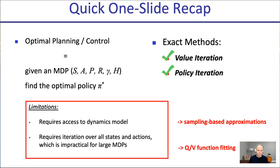In some sense you could think we're done, but we're not, because these methods have some limitations. First, they require access to the dynamics model or transition model — the probability of next state given current state and action. That's not often available when an agent has to learn in a new environment. So we'll look at sampling-based approximations where the agent collects their own experience and is still able to learn how to do well.